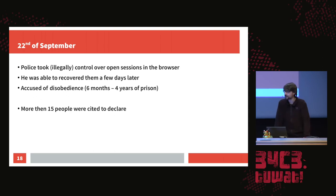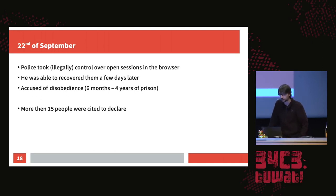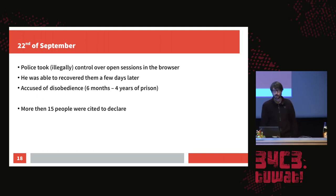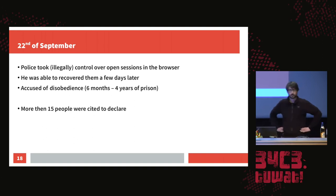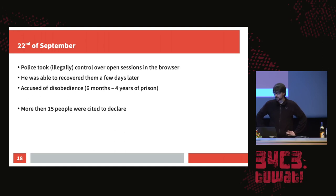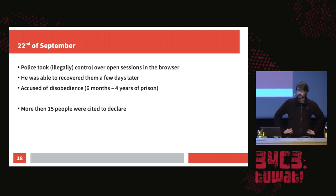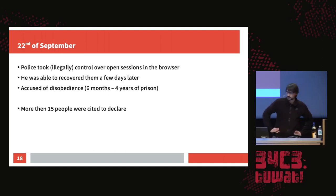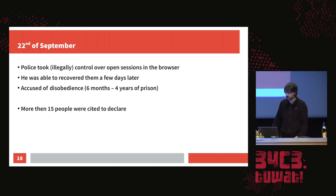He later talked to lawyers who said it was totally illegal, and he was able to recover the accounts after a few days by notifying Google and GitHub that his identity had been stolen. He is accused of disobedience, which carries six months to four years in prison, and is awaiting trial.